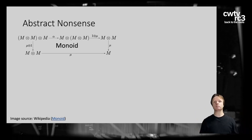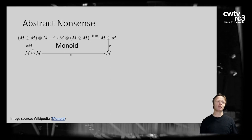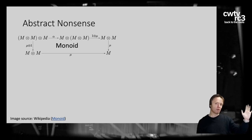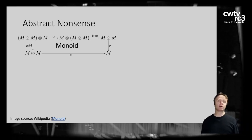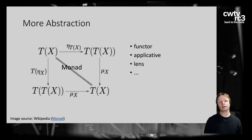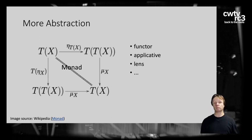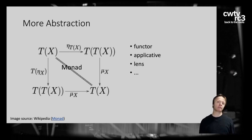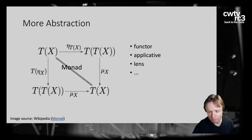The word functor comes from a particularly abstract branch of algebra called category theory — mathematicians sometimes call it 'abstract nonsense.' Despite the term, it's very useful and gives you a lot of insight into structure. Category theory frequently describes relationships between things through beautiful diagrams. Here's a characterization of a monoid in category theory. You don't have to understand it today, but after mastering monoids for a while, you'll enjoy looking at category theory. There's also the infamous monad — these are eminently practical for creating higher-order and higher-level abstractions.